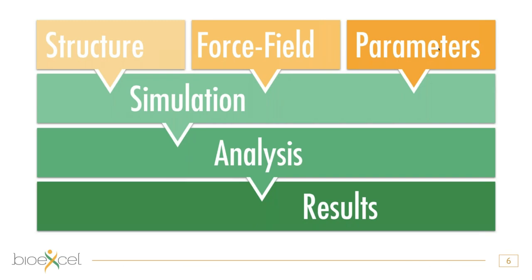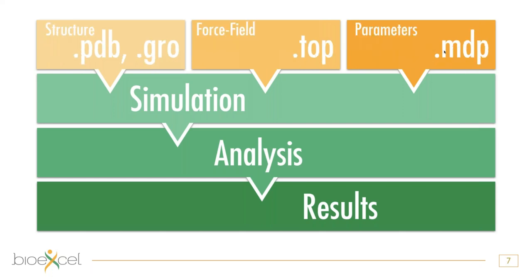So what do we actually want from GROMACS or our simulation setups? We want to take a structure, add a force field and some additional parameters, and from this via simulation go to some biophysically and chemically relevant results via an analysis step. It's quite a simple setup with very few conceptual ingredients. These things are reflected in GROMACS in different types of file formats: PDB and GRO files that give you the structure, the force field describing the interatomic interactions in the TOP files, and external parameters in the MDP file.